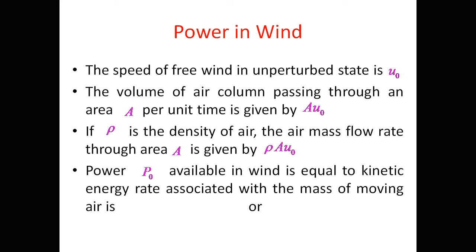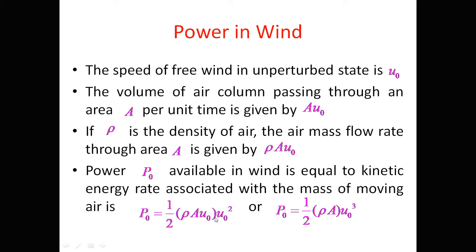If P₀ is the available power, it equals the kinetic energy associated with the mass of moving air: P₀ = ½·ρ·A·u₀·u₀² = ½·ρ·A·u₀³. This is just like kinetic energy — P = ½mv² — where m is the air mass (ρ·A·u₀) and v is the speed u₀. Therefore, P₀ = ½·ρ·A·u₀³, which is the power in the wind.